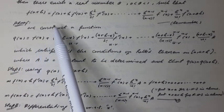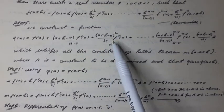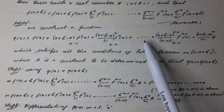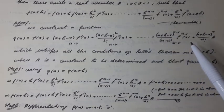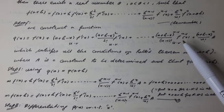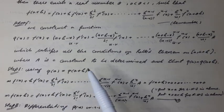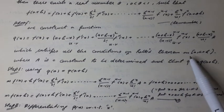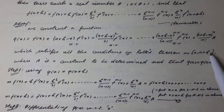Proof: We consider an auxiliary function φ(x) = f(x) + (a+h−x)·f'(x) + (a+h−x)²/2! · f''(x) + ... + (a+h−x)^(n-1)/(n-1)! · f^(n-1)(x) + (a+h−x)^n/n! · A, which satisfies all the conditions of Rolle's theorem on the closed interval [a, a+h], where A is a constant to be determined such that φ(a) = φ(a+h).